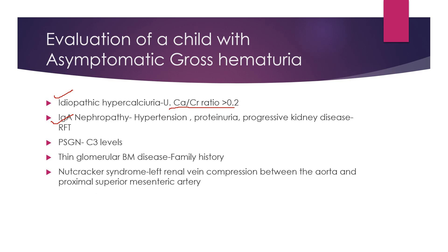If features are suggestive of IgA nephropathy — some proteinuria or raised serum creatinine — do an RFT and follow up accordingly. If the child is asymptomatic with none of those features, still keep PSGN in mind and evaluate with ASO level, C3 levels, etc. Then look for benign familial hematuria or thin glomerular basement membrane disease — there may or may not be a family history, but prognosis is fairly good. Also consider nutcracker syndrome, which may be underdiagnosed; diagnosis is by Doppler ultrasonography.